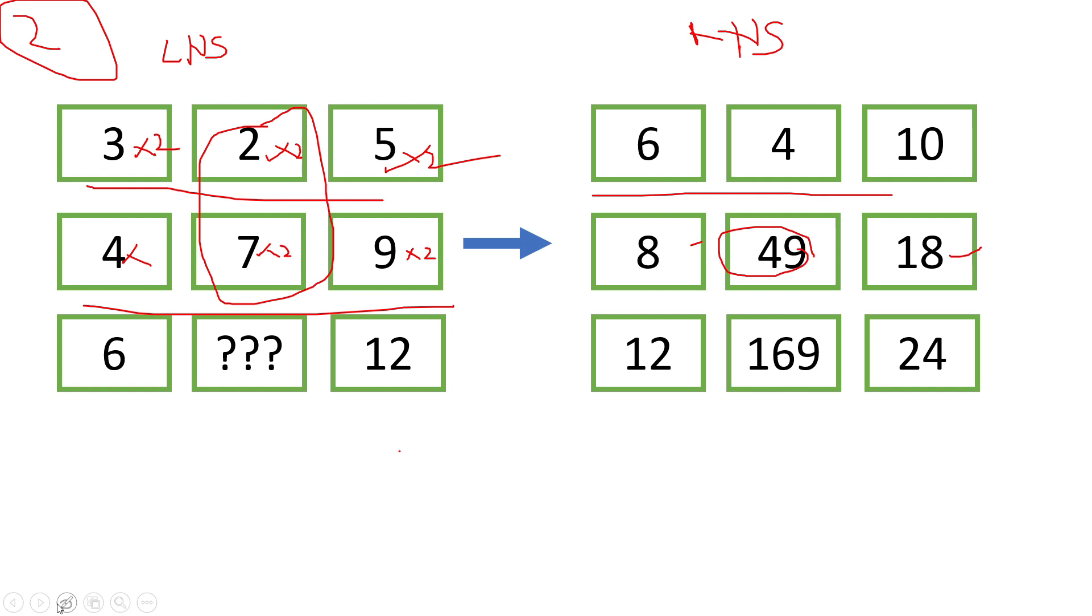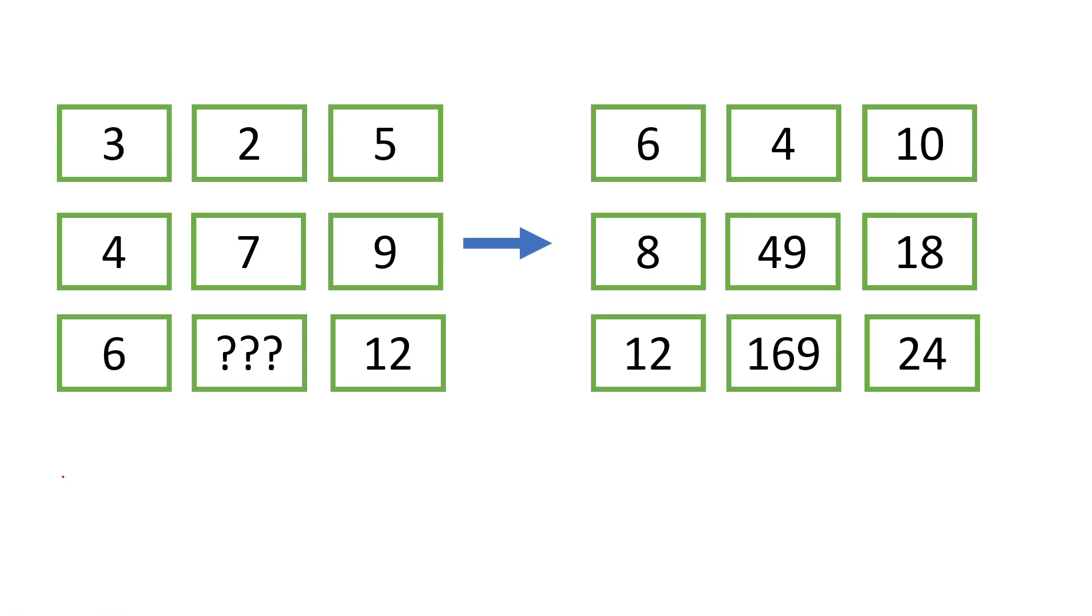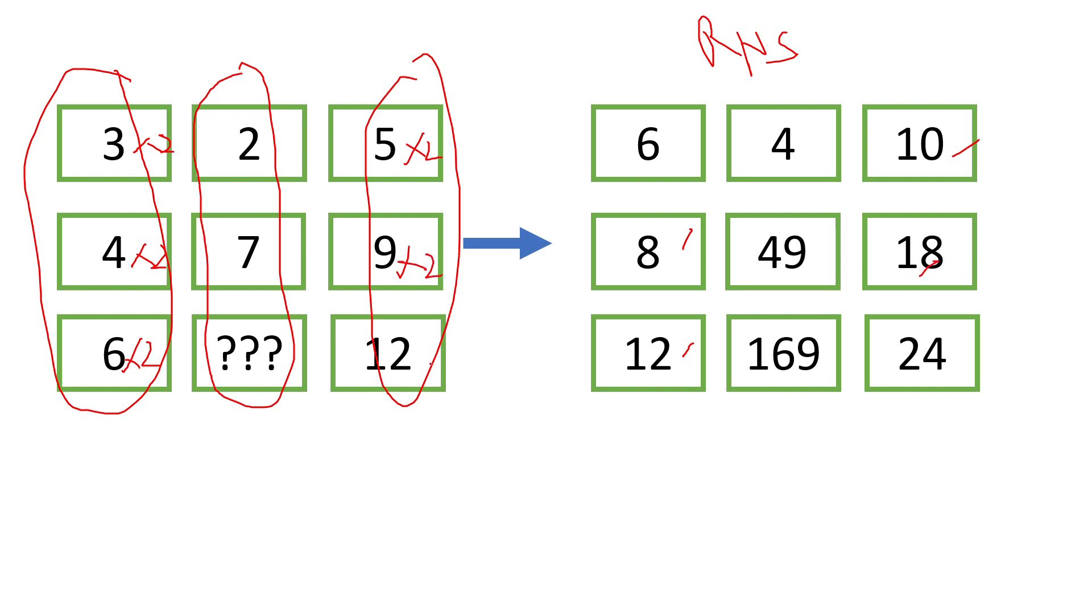Next let's proceed by doing them column wise. Let me take the pen and select this column first. Again if you look at the RHS, it is just multiple of 2. If you do 3 into 2 it is 6, if you do 4 into 2 it is 8, again 6 into 2 it is 12. Just leave the middle column as of now. Let's select the last column. Again last column, if you look at the RHS they are again multiple of 2. 5 into 2 is 10, 9 into 2 is 18, and again 12 into 2 is 24.